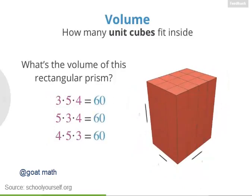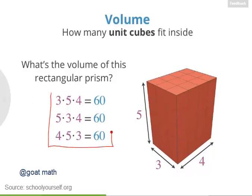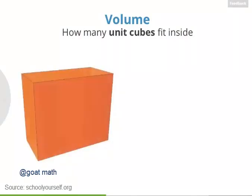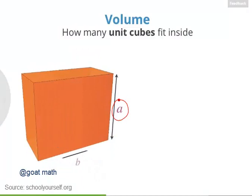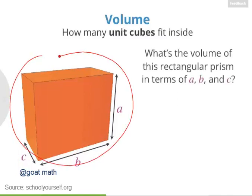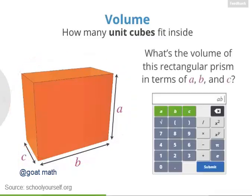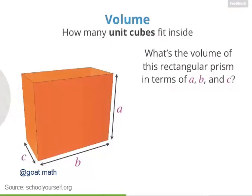As you can see, multiplying the 3 dimensions of a rectangular prism — length, width, and height — gives you the volume of the prism. So for this prism, the volume is 3 times 4 times 5. Next, take a look at this rectangular prism. Let's say its height is A, its length is B, and its width, or depth, is C. To find the volume of any rectangular prism, you can multiply the lengths of its 3 dimensions.